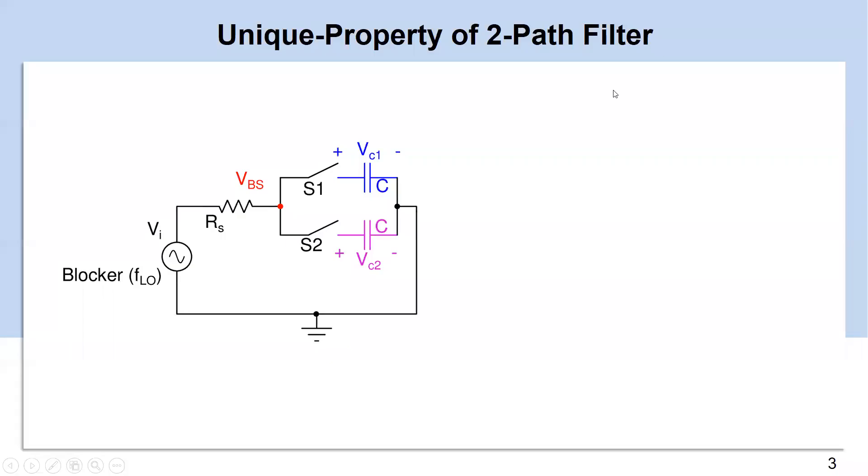Now consider a two-path filter whose clock phases lead or lag the input by phase of pi by two. Since each of the capacitors sees one-half cycle of input with zero average, ideally VC1 and VC2 should be zero.